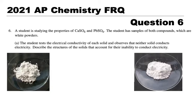We're going to look at the 2021 AP Chemistry FRQ question number six. A student is studying the properties of calcium sulfate and lead sulfate. I've grabbed a couple of pictures of those two chemicals from the internet. The student has samples of both compounds which are white powders.